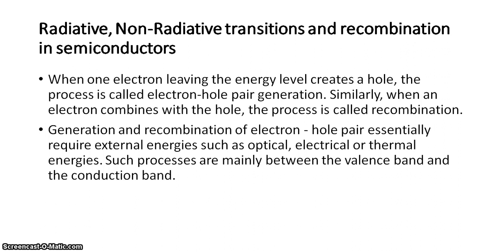When we give energy to a system, the electrons within the valence band take the energy and go to the conduction band. When an electron leaves the valence band it creates a hole, thus an electron-hole pair is generated. Similarly, when an electron combines with the hole, the process is called recombination — this recombination is between the electrons present in the conduction band with the holes present in the valence band.